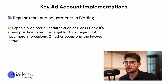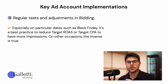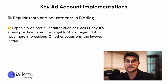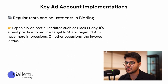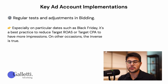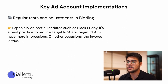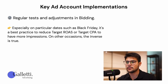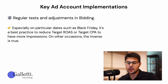Fourth point: regular tasks and adjustments in bidding. This is the single most important factor for day-to-day optimizations because it's where you can really find an edge. On particular dates such as Black Friday, for example, it's best practice to reduce the target ROAS or target CPA to get more impressions. On other occasions the inverse is true — you increase the target ROAS and target CPA. On Black Friday specifically, because you already know you're getting more purchases, you can let Google run a little looser in terms of your bidding and target goals.